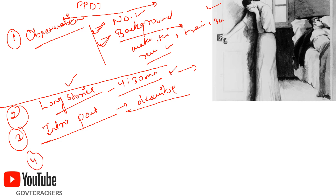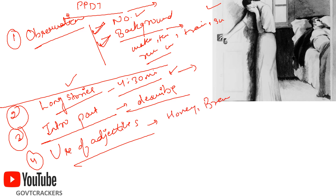The next important mistake is the use of adjectives. You might think you need to show officer-like qualities by using words like 'honest,' 'brave,' 'hard-working.' But when you use a lot of adjectives, it signals that you have referred to a coached source. In a natural situation, we don't think of these words — qualities highlight automatically through actions and do not need adjectives to be proved. This tells the assessors you are a trained student or have copied a story.